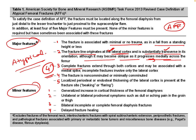Third, it is a complete fracture extending through both the lateral and medial cortex, and the medial cortex may be associated with a medial spike. Fourth, the fracture is non-comminuted or minimally comminuted. Fifth, there may be periosteal or endosteal thickening of the lateral cortex at the fracture site. Out of these five criteria, four must be positive.